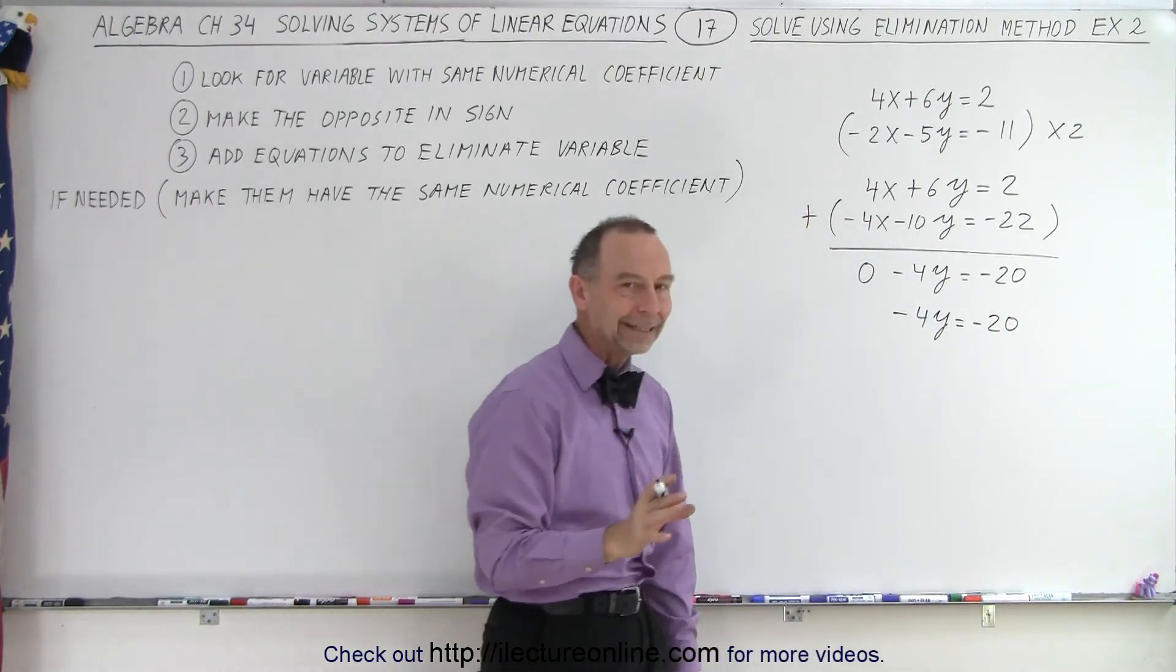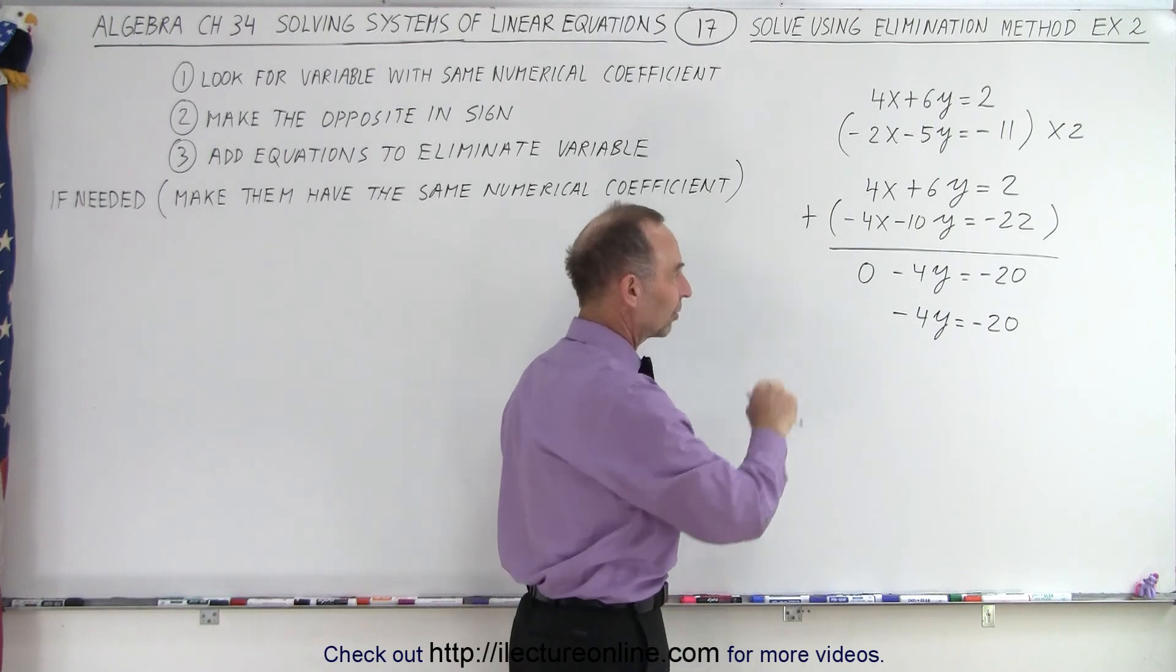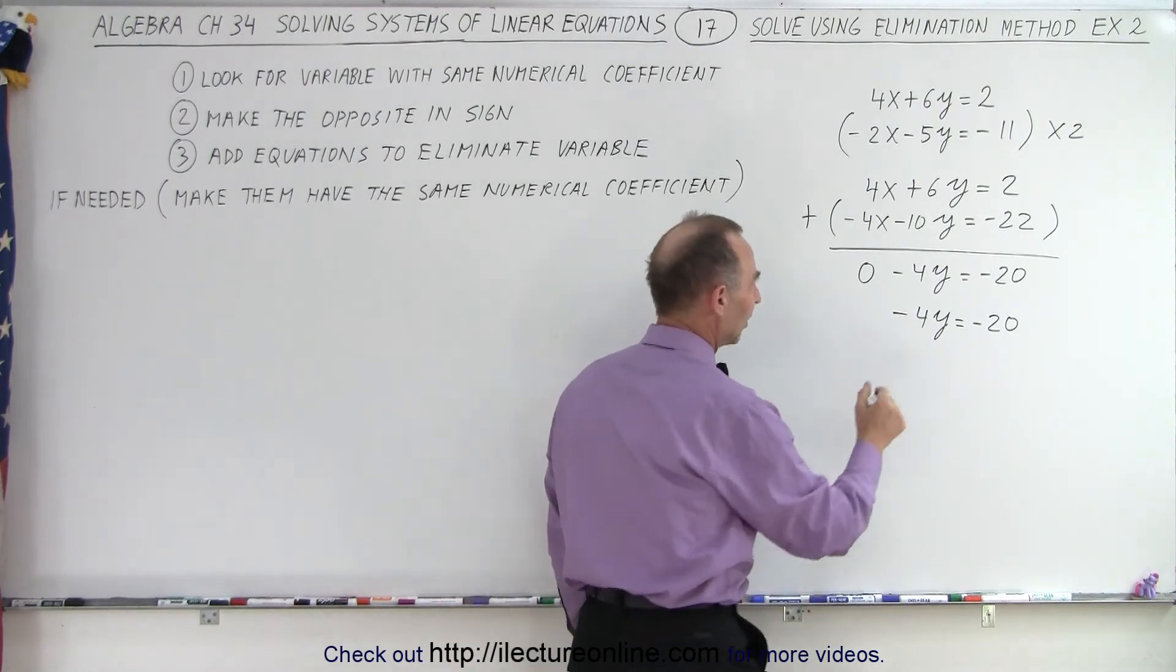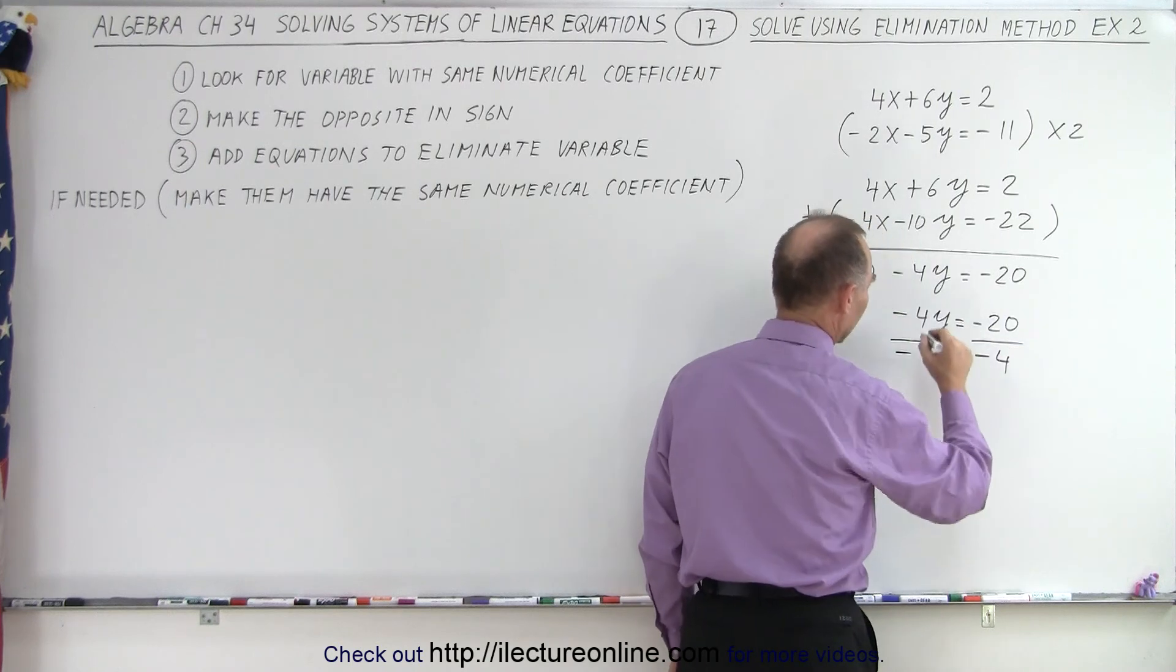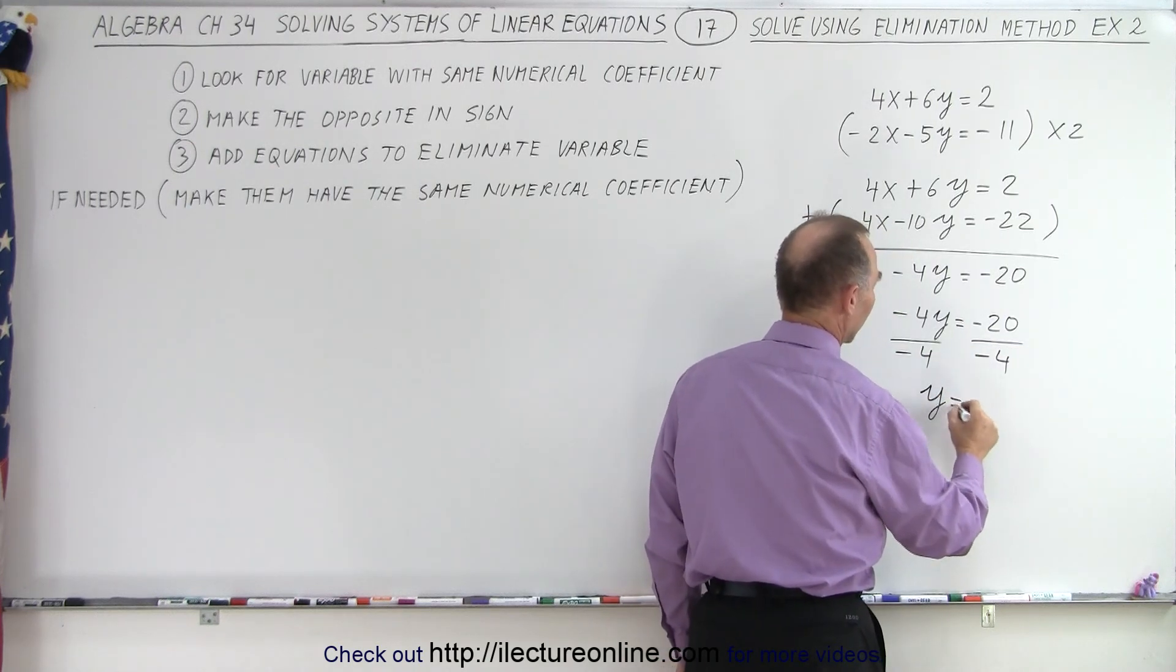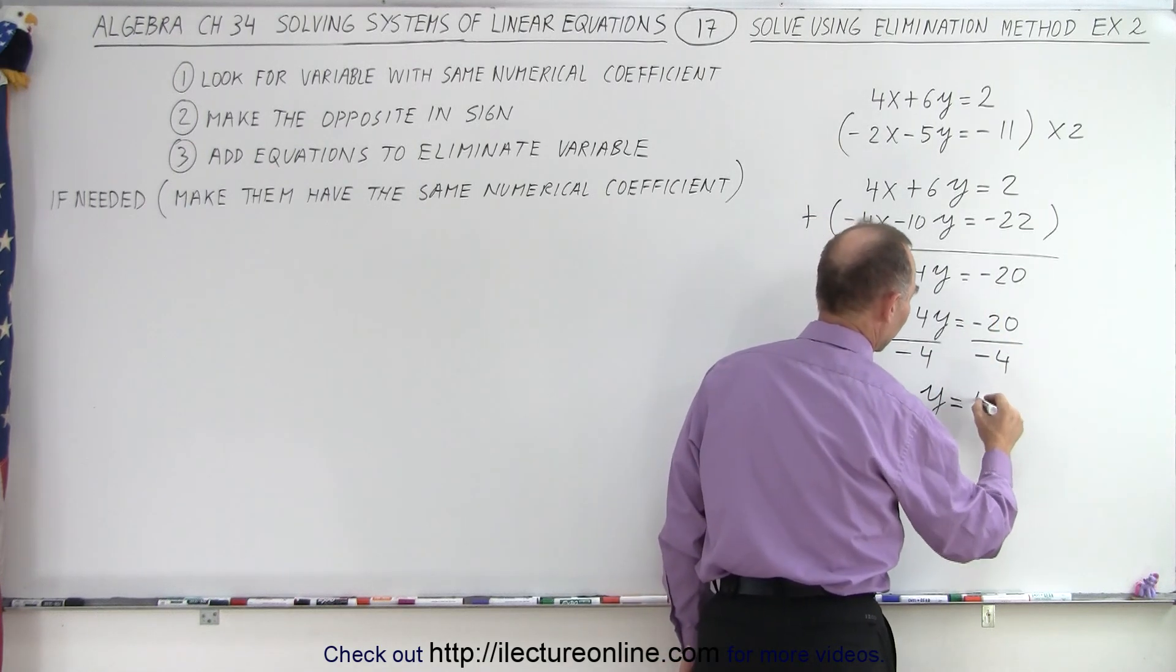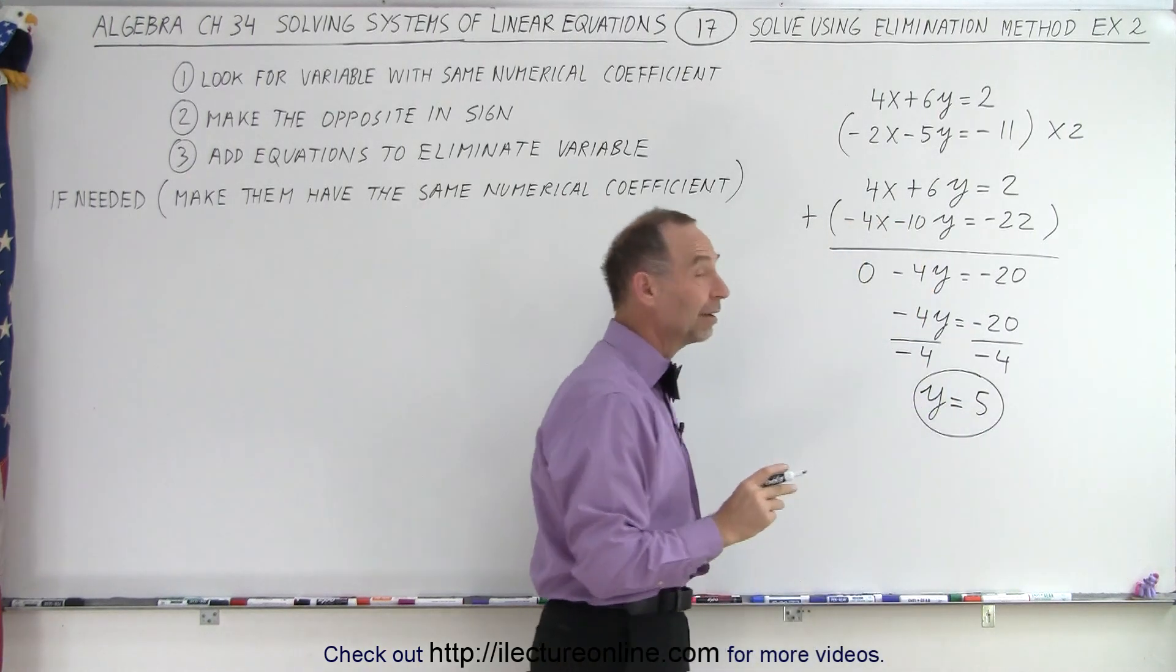Notice I always like things to look cleaner and neater, get rid of the 0, gets confusing. Now I can see if I divide both sides by negative 4, then this gives me Y equals negative 20 divided by negative 4 is a positive 5. So Y equals positive 5.